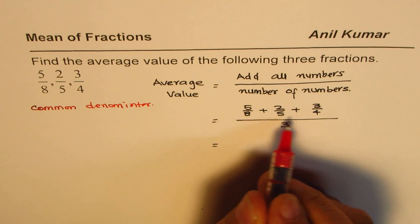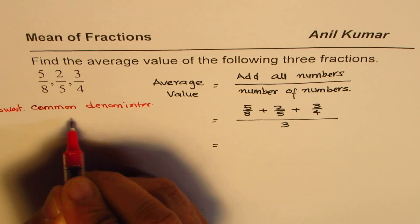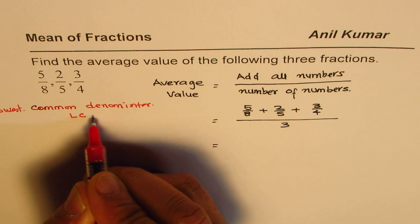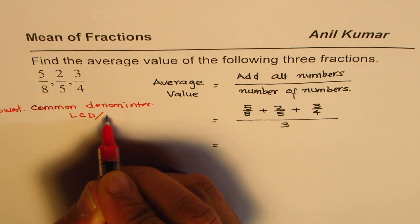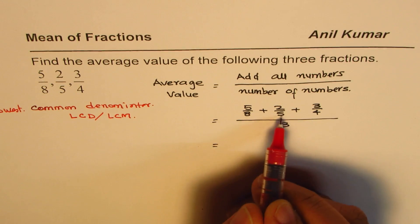So basically we look for the lowest common denominator, so we'll write the word lowest here—so LCD. Sometimes we use D or we say lowest common multiple also, right?